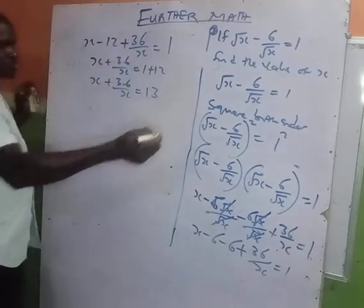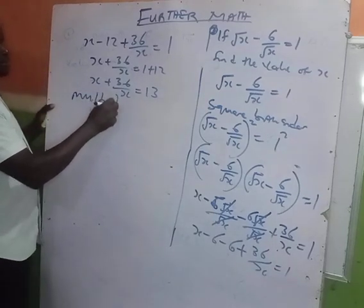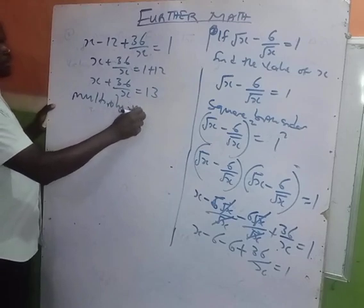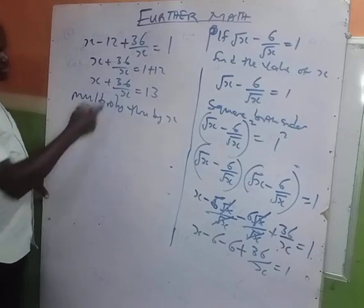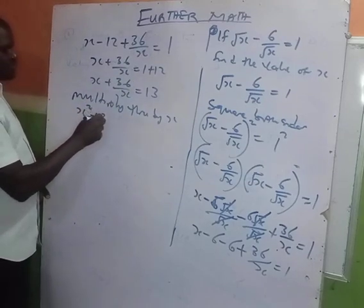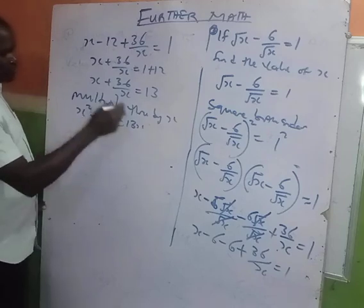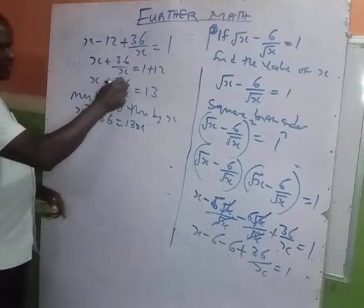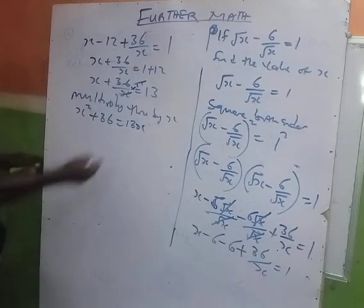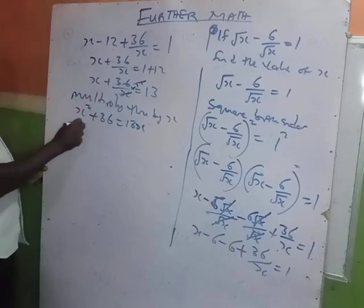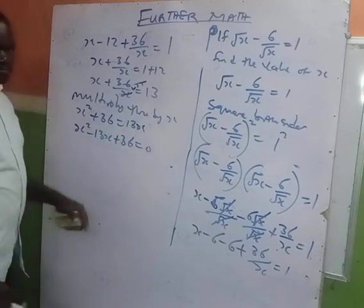Now multiply through by x. x times x gives x², and x times 36/x gives 36, equal to 13x. Bringing everything to one side: x² - 13x + 36 = 0.